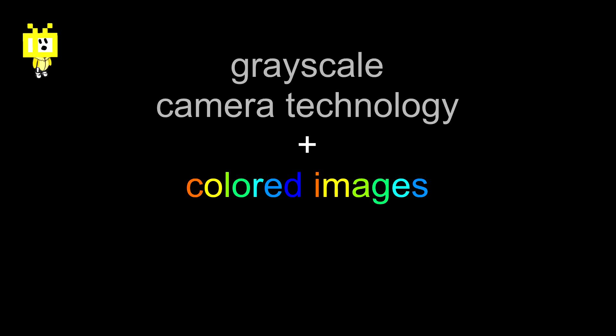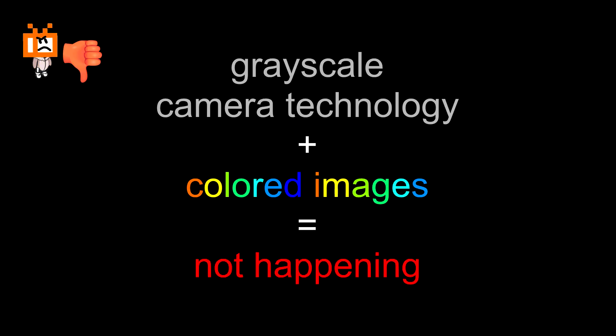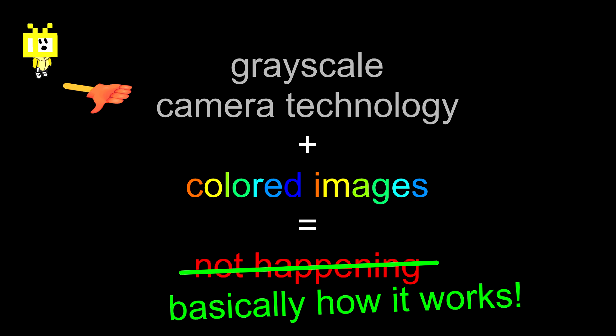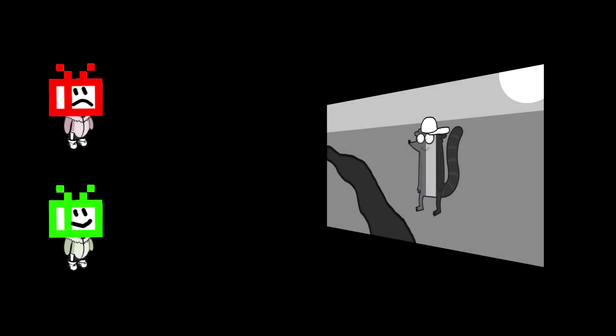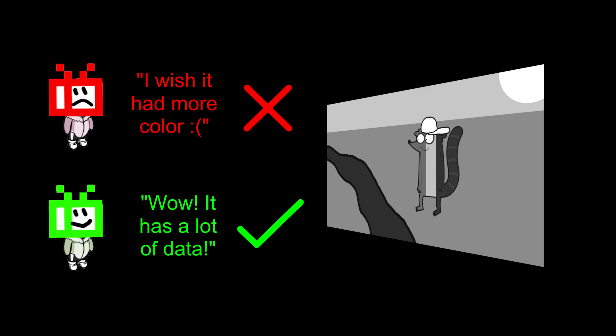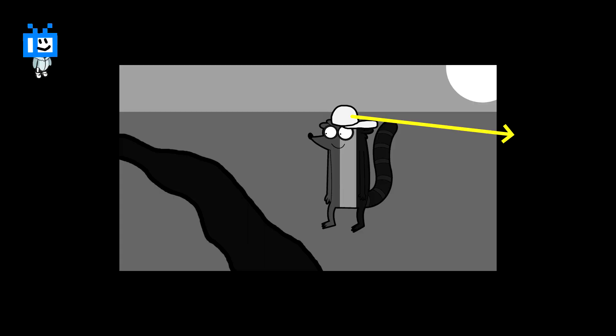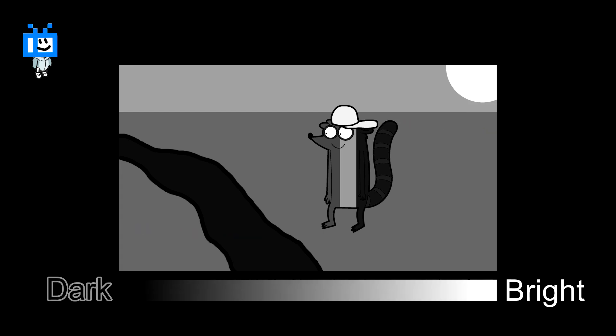When I first found out about this I thought, well that's impossible, right? Capturing color probably requires a completely different technology. But the thing is, it doesn't. So first we gotta change how we look at a black and white image. Instead of seeing it as an image with no color, we need to see it as an image that only shows brightness. So Rigby's hat here isn't white, but rather bright. And the same goes for the water — it's basically a spectrum of brightness.